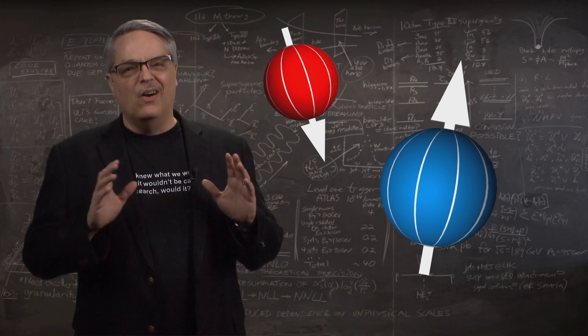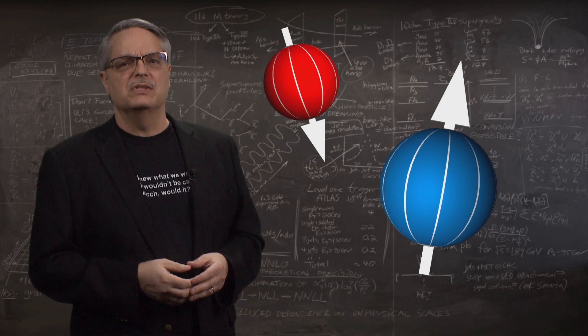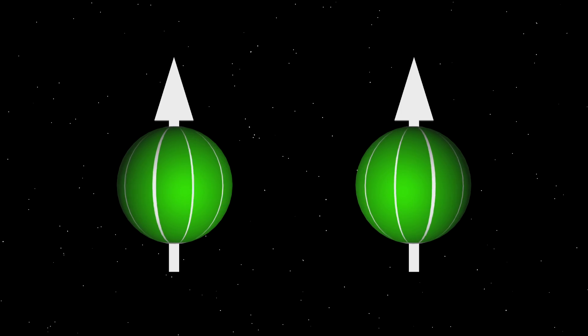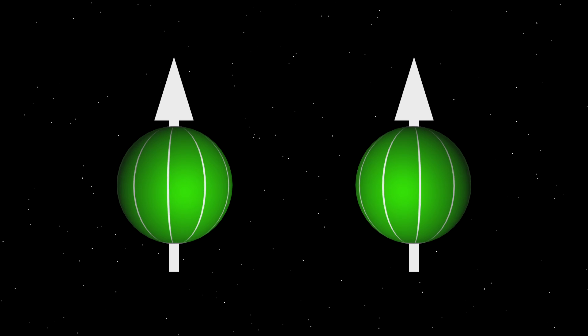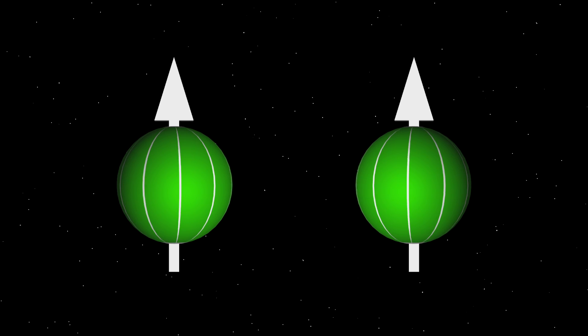Subatomic particles aren't little spinning balls, but that mental image can be useful in some instances. Luckily, this is one of those times. So if you imagine, say, an electron as a spinning ball, the axis of rotation is parallel or anti-parallel to the electron's direction of motion.